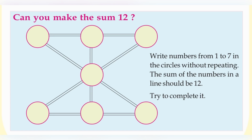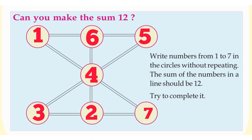First we have to find out which numbers give the sum 12, and then we can complete the puzzle. Here is a model. The first line has circles 1, 6, 5 — 1 plus 6 plus 5, the answer is 12. In the center portion, you can see the 4. And the last line: 3 plus 2 plus 7, that is also 12.